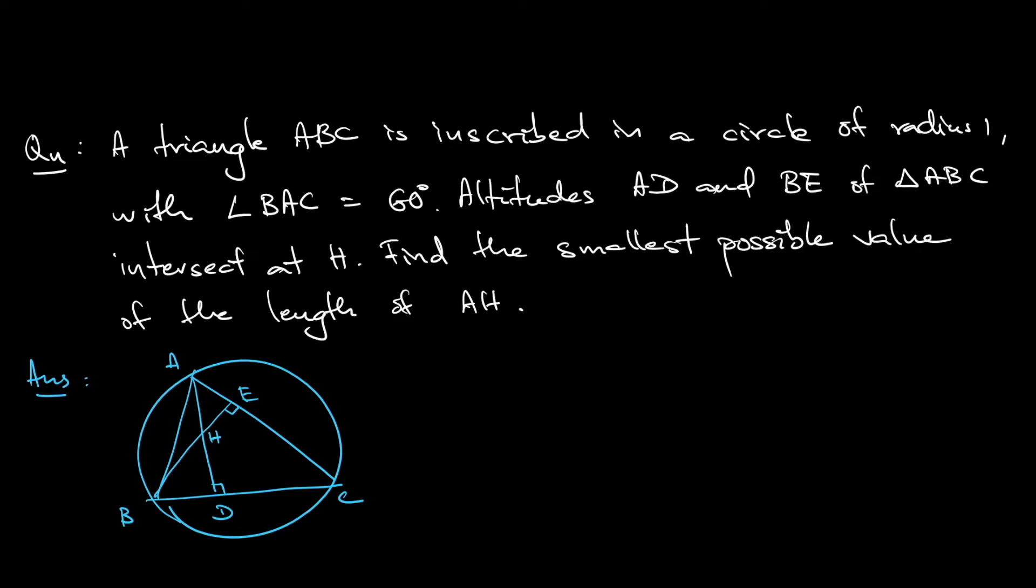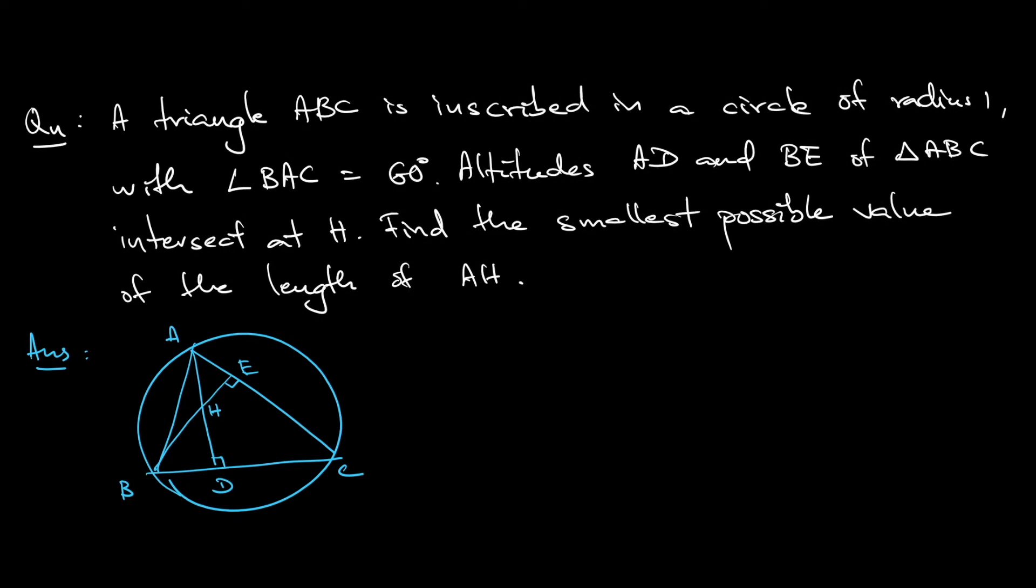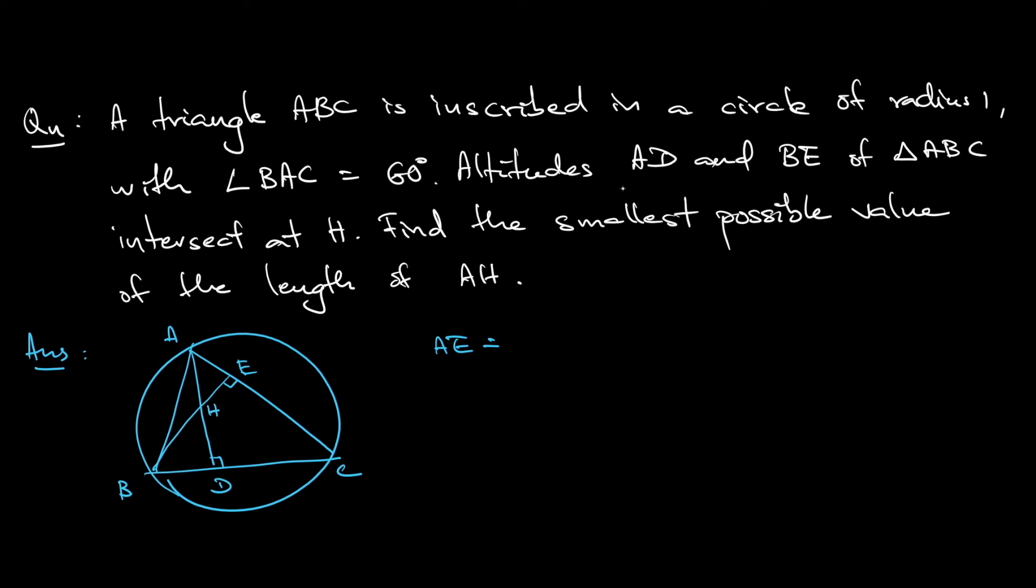So if you focus on triangle ABE, you would have AE. It would be AB multiplied by cosine of angle A. And angle A is 60 degrees. So just put cosine of 60 degrees.